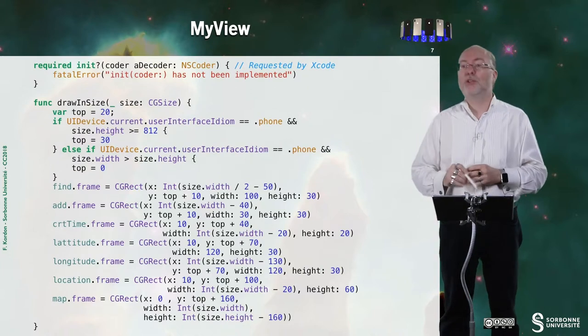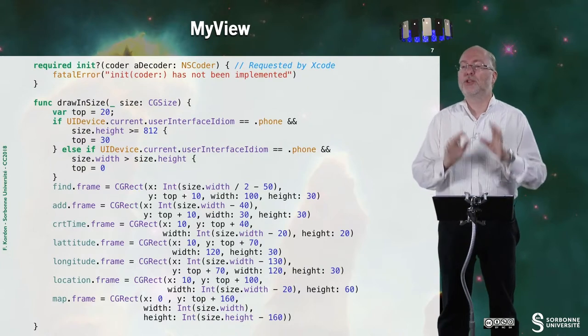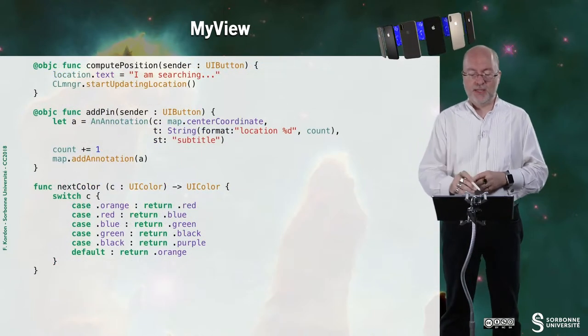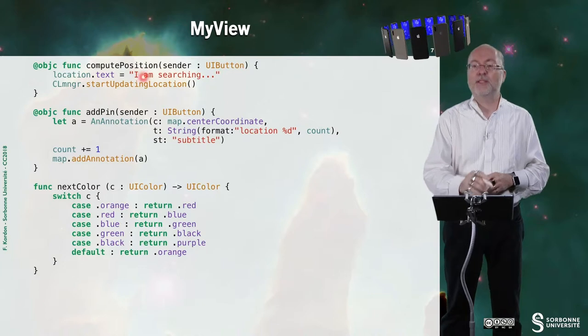This is also code I will not comment because you are used to it. I just show it to you if you want to reproduce the example. And here this is the method that is associated to the button. So what I am doing is I am starting to update location. That's all.